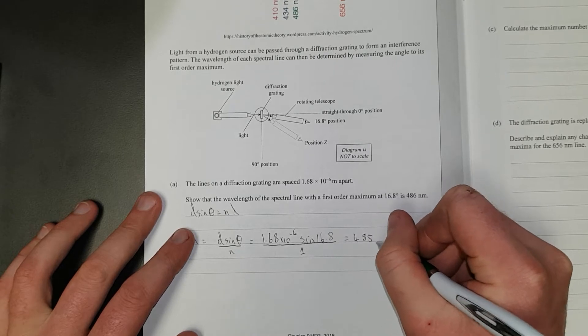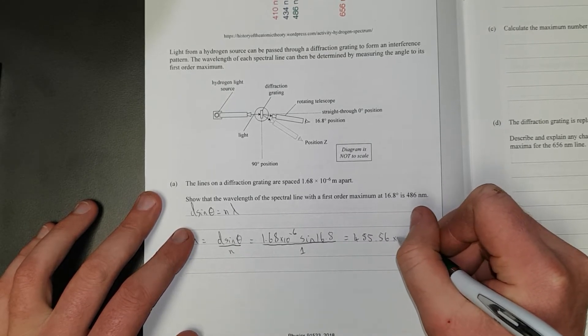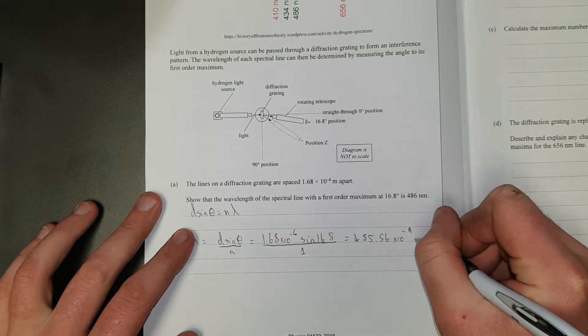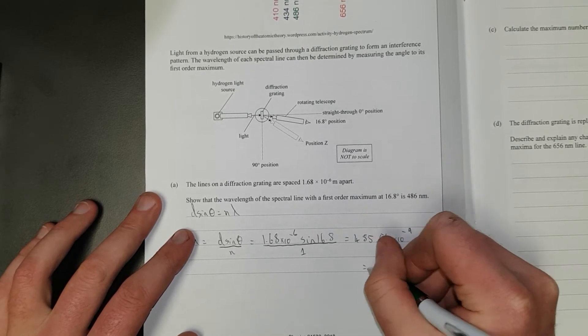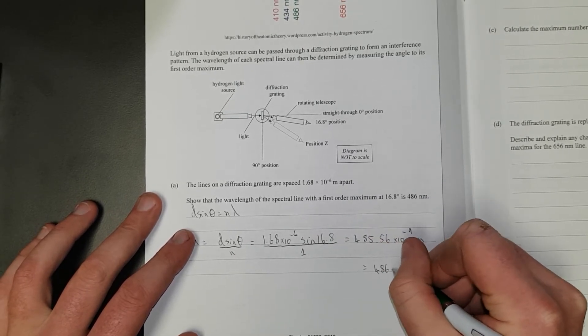...which is equal to 1.68 times 10 to the negative 6 sine 16.8 divided by 1, equals 485.56 times 10 to the negative 9 metres. And then under here, 486 nanometres.